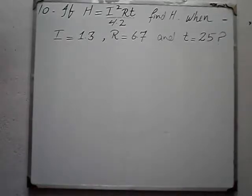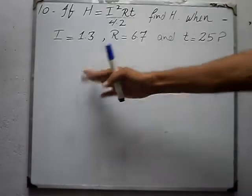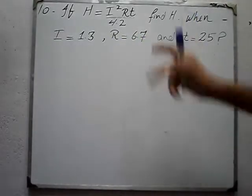Question number 10: If H is equal to I squared Rt over 4.2, find H when I, R, and t are given.